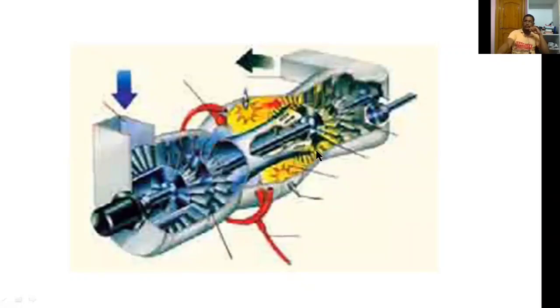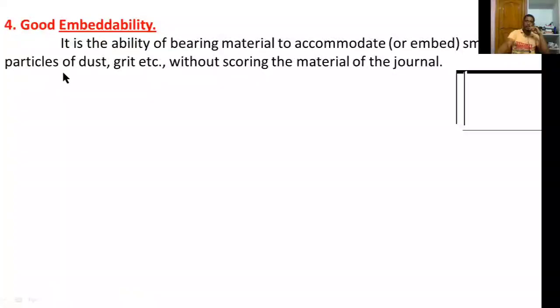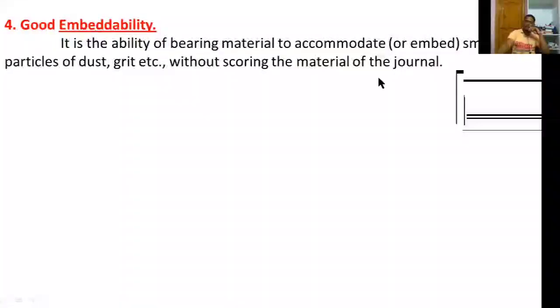Another property is good embeddability. It is the ability of a bearing material to accommodate or embed small particles of dust and grit without scoring the material of the journal. The journal is the rotating shaft member in contact with the bearing.